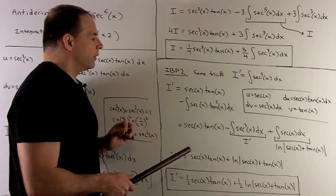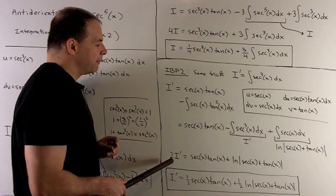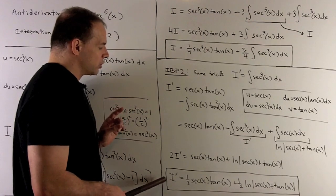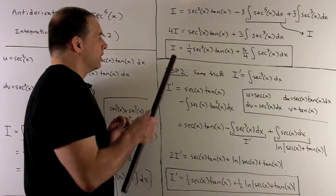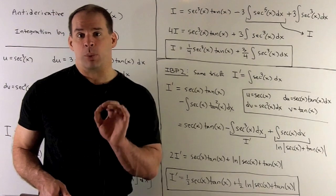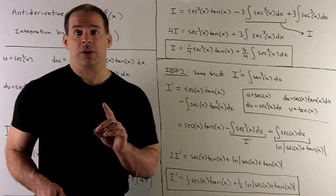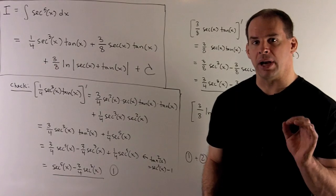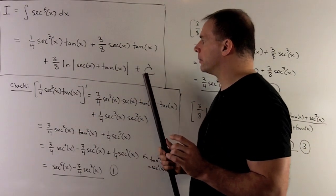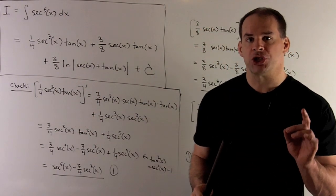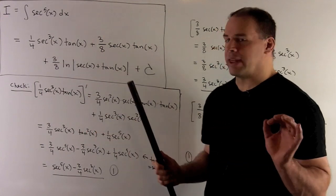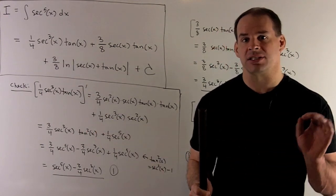We push i prime to the other side, giving us our answer for i prime — let's box that. Then we take this boxed result, put everything together, and substitute i prime into i to get our final answer.